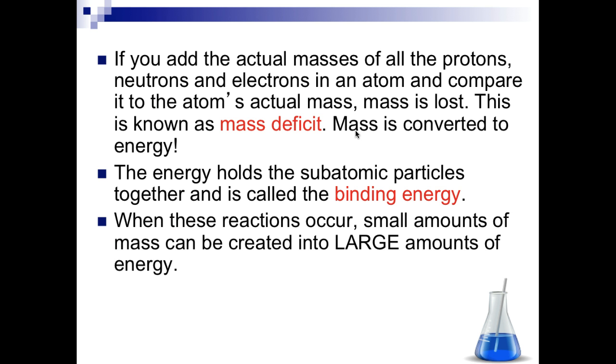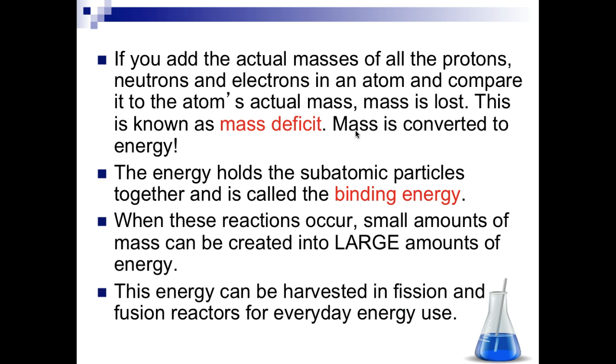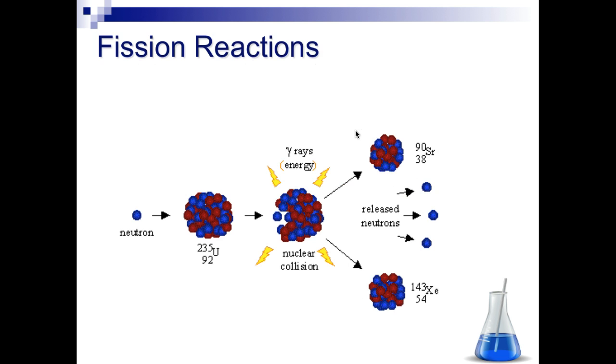When these artificial transmutation reactions occur, small amounts of mass can be created into large amounts of energy. That's where we can get very destructive when we use nuclear power in nuclear weapons. This energy can be harvested in fission and fusion reactors for everyday use for energy.